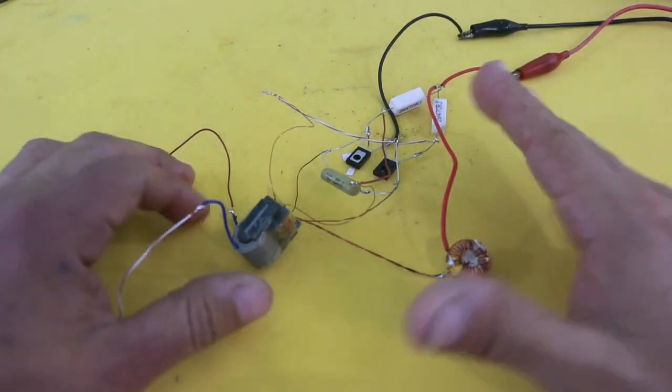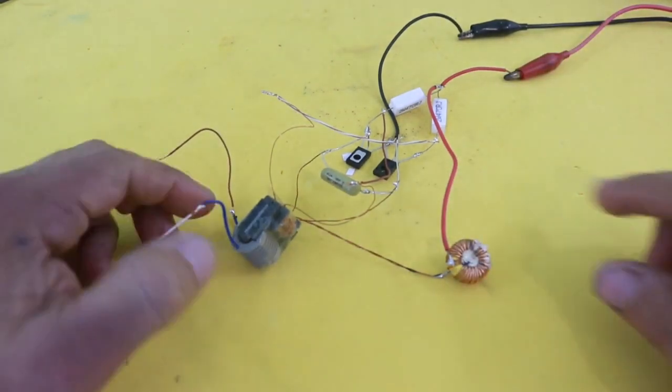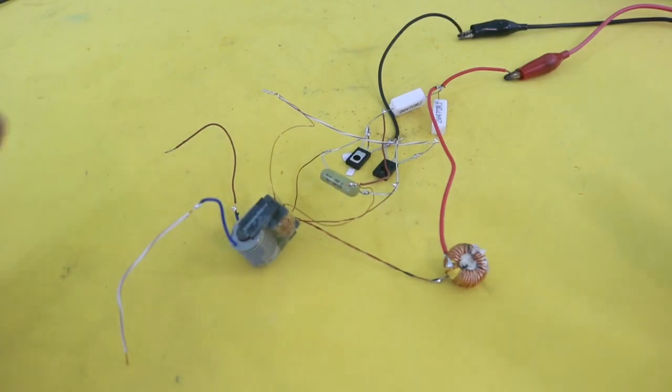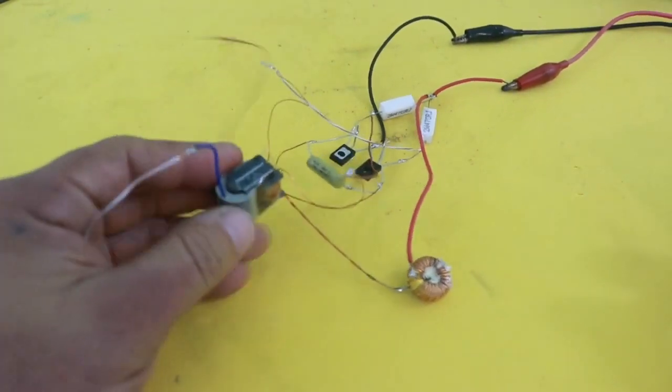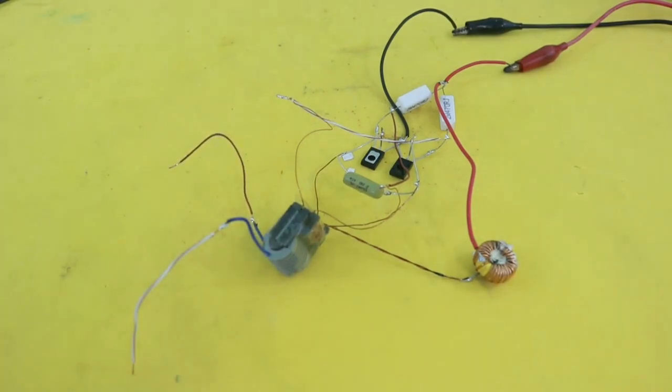So there it is, the circuit works very well, the transistors do not get hot at all. So if you want to experiment with these little power supplies, you can try this Royer oscillator circuit. That's all for today. Thanks for coming to my channel and see you in the next video.